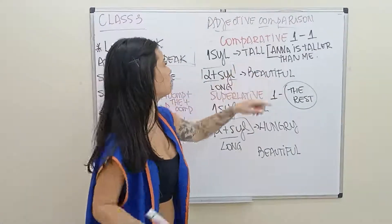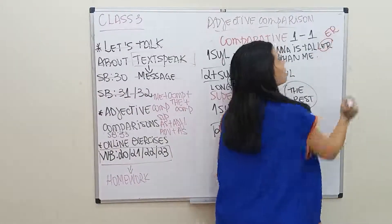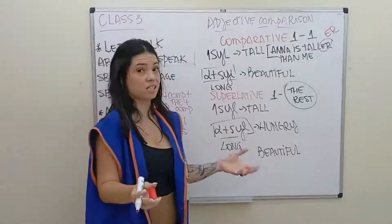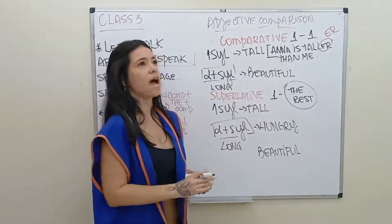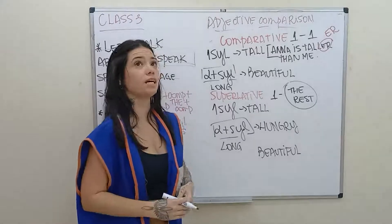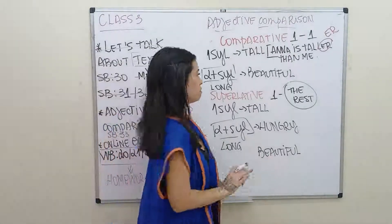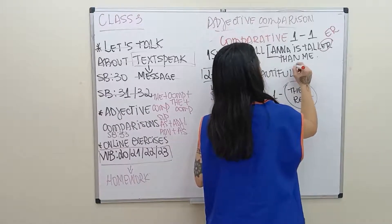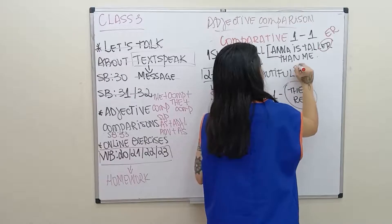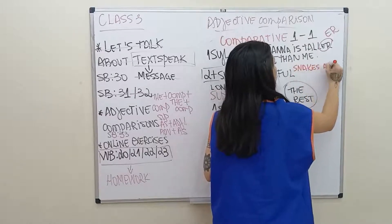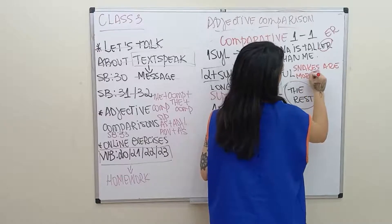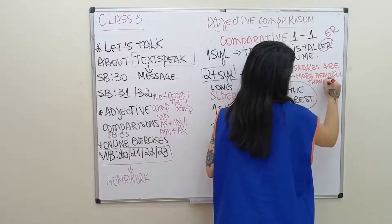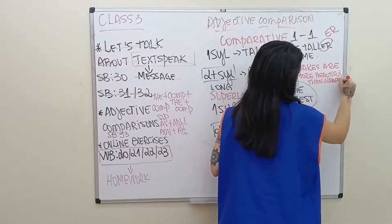So, what happens to the adjective tall? I add -er. When I say beautiful, I can say that snakes — because I love snakes — are more beautiful than giraffes. I don't think giraffes are beautiful. So, snakes are more beautiful than giraffes.